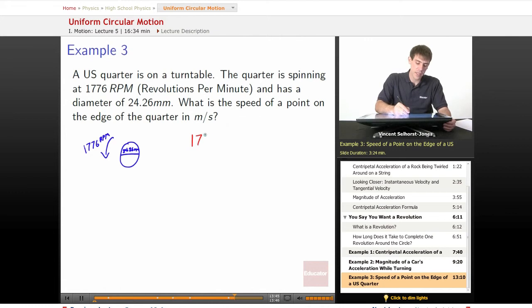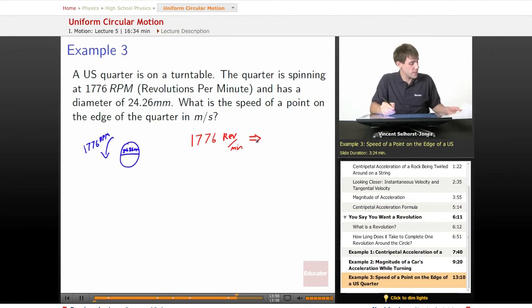Starting off, 1776 revolutions per minute. We'll put it as rev per min. What would that be if we wanted to get this in seconds? Well, we divide that by 60, and that's going to get us 1776 divided by 60 becomes 29.6 revolutions per second.